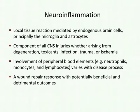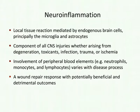It's important to keep in mind that the involvement of peripheral blood elements — things like neutrophils, monocytes, and lymphocytes — varies a lot with disease process. In a disease like multiple sclerosis, there's a very prominent role for peripheral blood elements because it's a lymphocyte-driven pathology. Whereas in Alzheimer's disease, where beta plaques elicit an inflammatory reaction, there's not much evidence that peripheral blood elements play a major role. Crucially, neuroinflammation is a wound repair response that has both potential beneficial and detrimental outcomes.